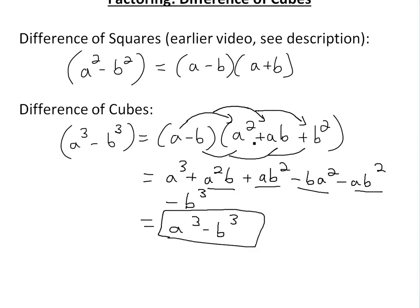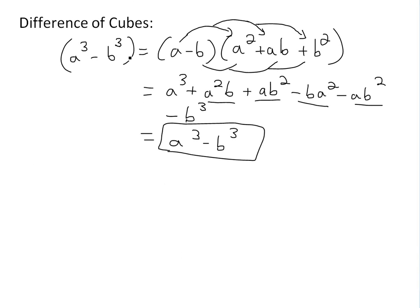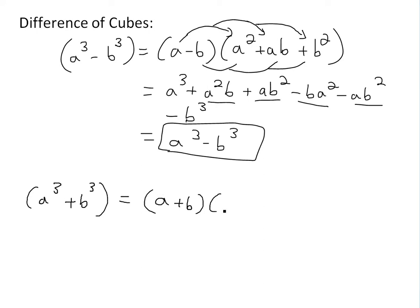So as you can see, this is the difference of cubes right there. Also, if you wanted to do an addition of cubes, you could simply change the signs around. So if you had a cubed plus b cubed, you do a similar thing: this will be a plus b — same sign — and then the only difference is you change this to minus ab, then plus b squared.